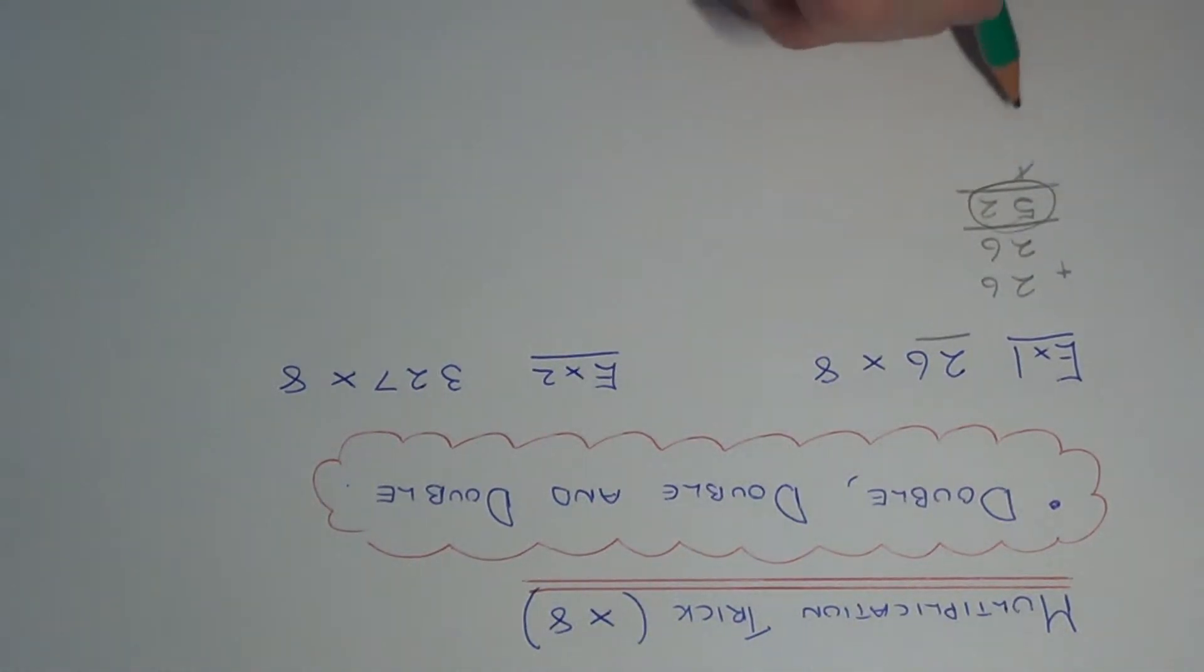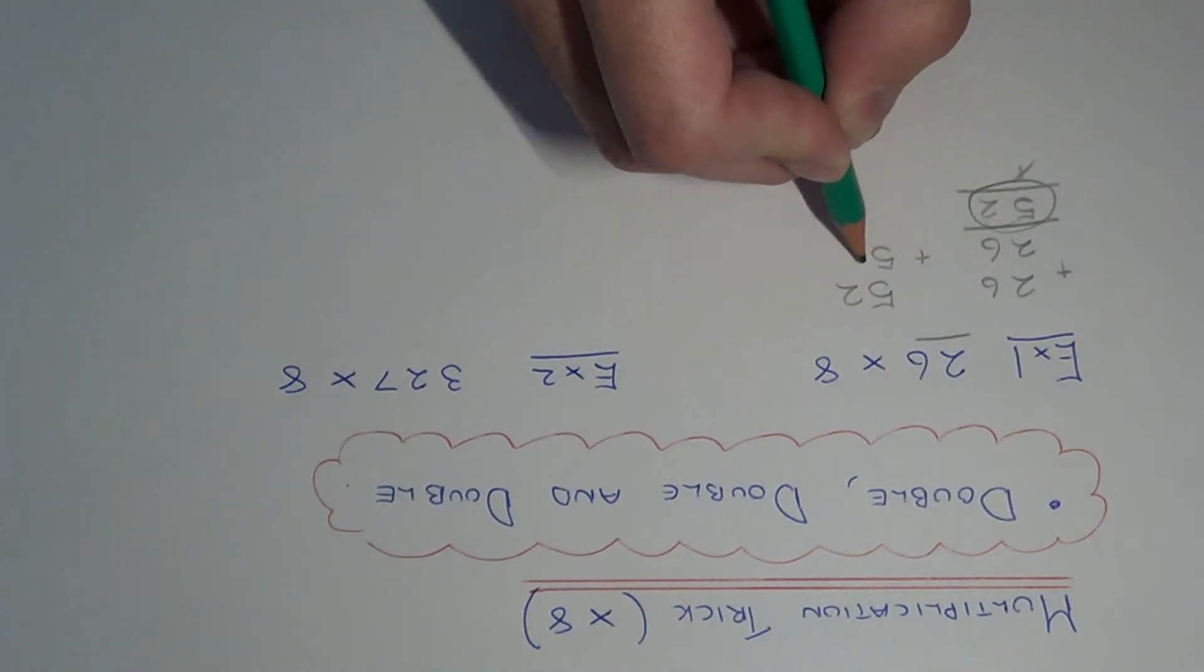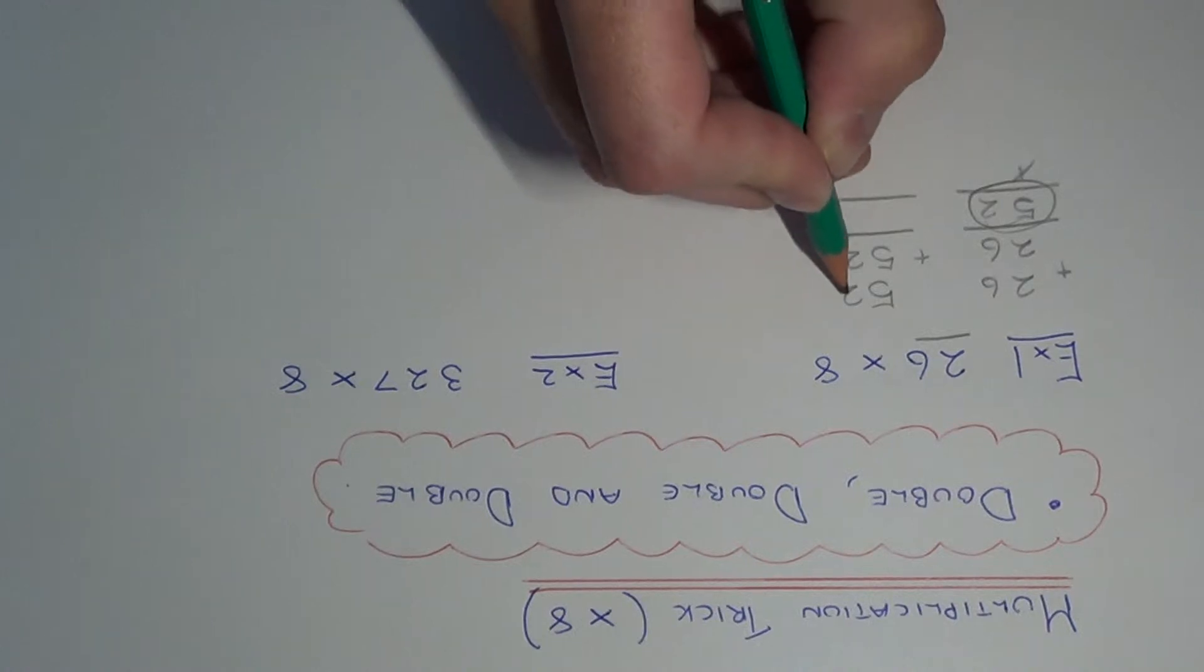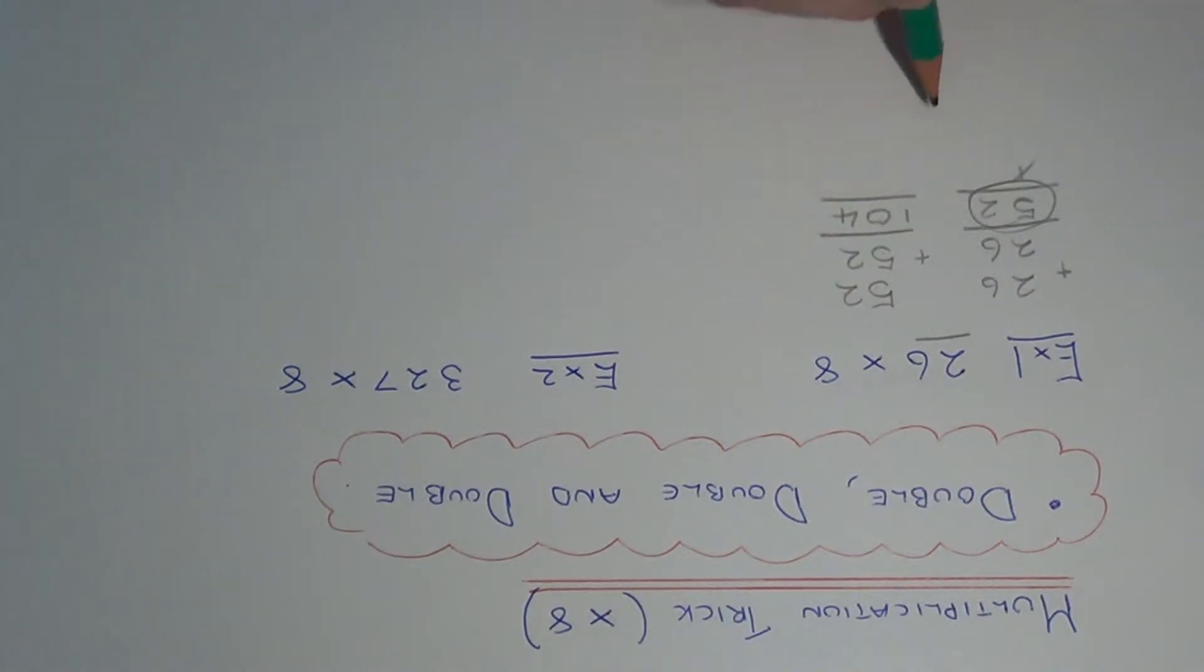We then need to double this answer here, so work out 52 add 52. 2 add 2 is 4, 5 add 5 is 10, so we get 104.